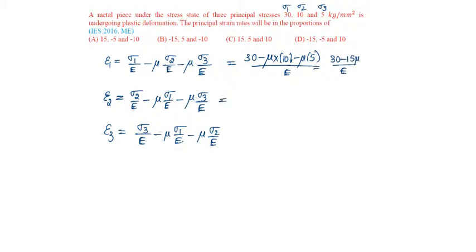Whereas, epsilon 2 will be equal to sigma 2 that is 10, minus mu into 30, minus mu into 5, by E, which is equal to 10 minus 35 mu by E.